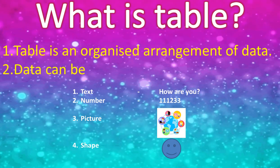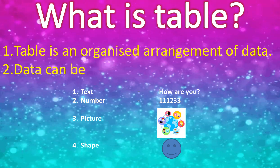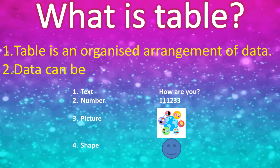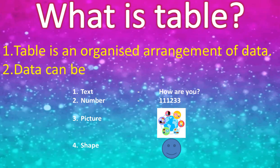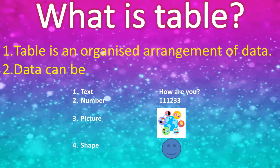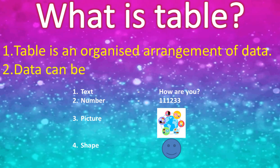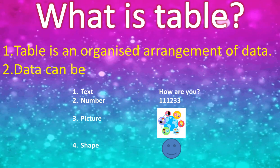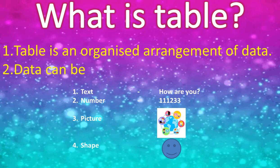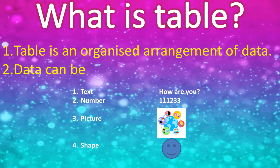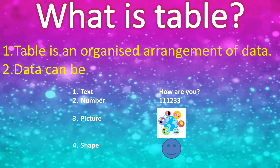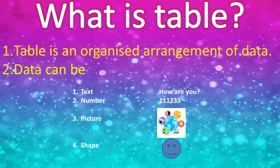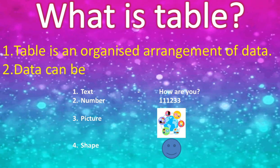Data can be text — text is an arrangement of characters, numbers, or special symbols. Data can also be a number, meaning any numeric value. Picture means an image, and any shape can be inserted inside a table. So a table is an organized arrangement of data, and data can be text, number, picture, and shape.